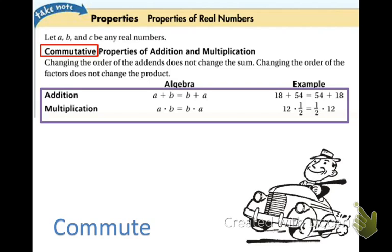The algebra and also the example: a plus b equals b plus a. So an example of that would be 18 plus 54 equals 54 plus 18. You get the same exact answer. For multiplication we have a times b equals b times a. An example of this would be 12 times one-half is equal to one-half times 12.